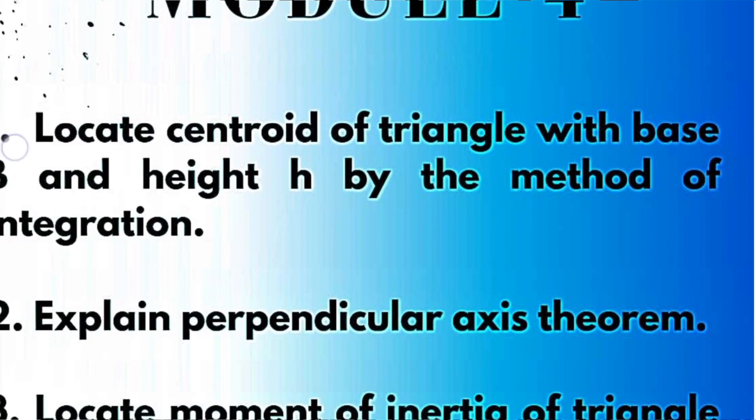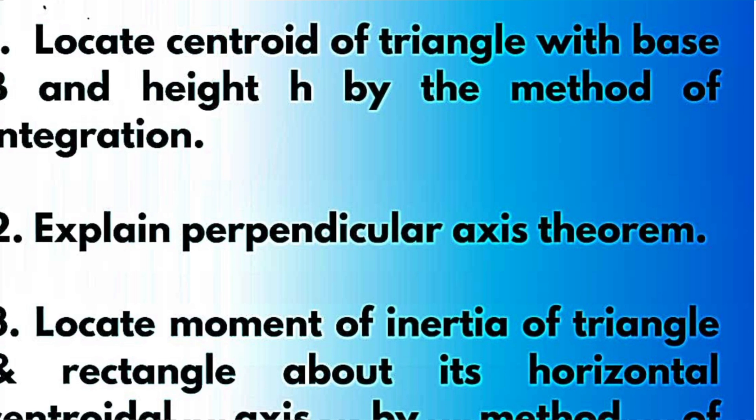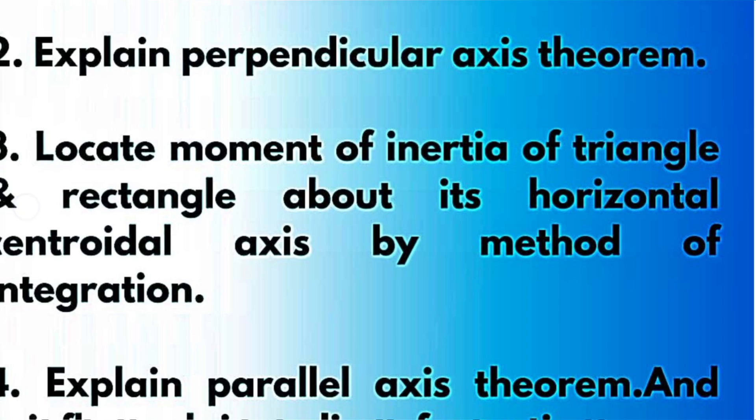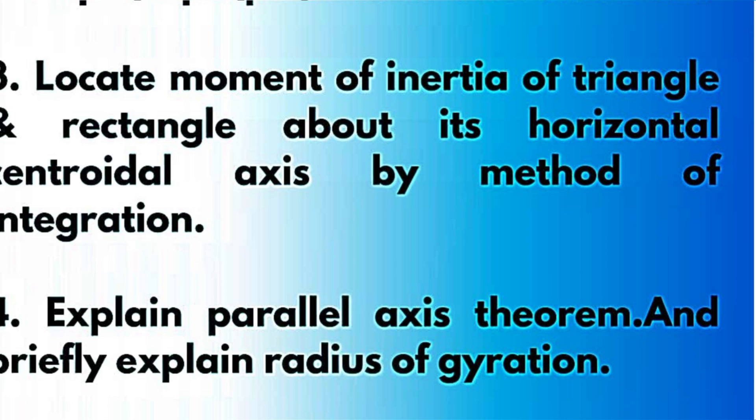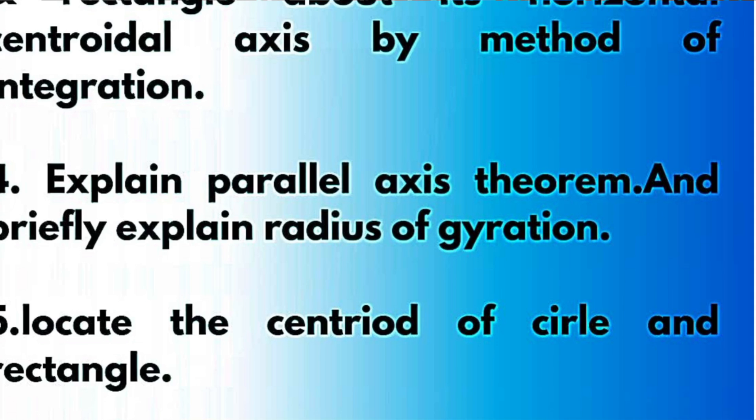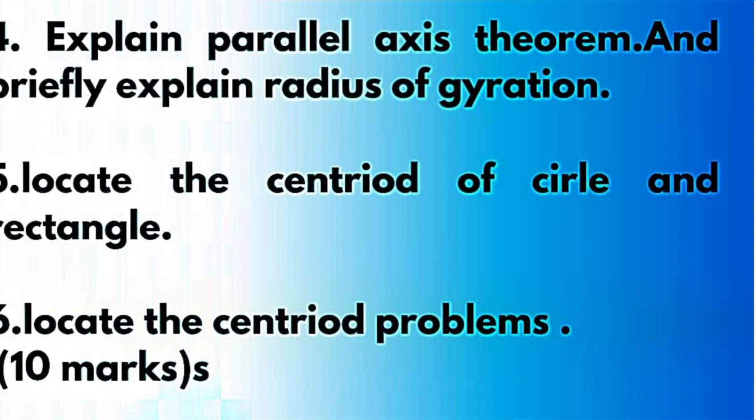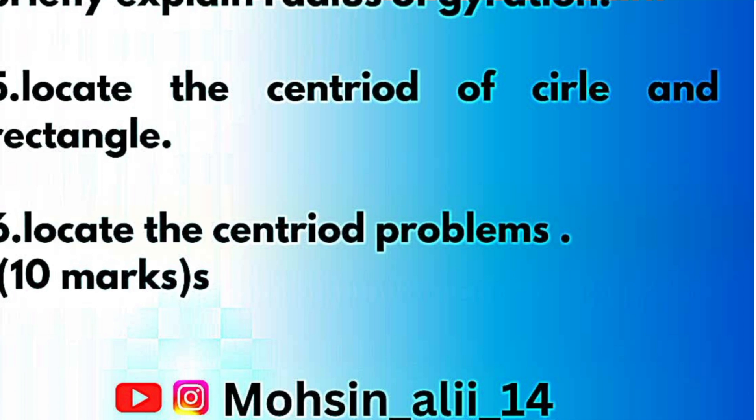Next is module 4 where again numericals are there and some theoretical portions like explain perpendicular axis theorem. Locate centroid of a triangle with base b and height h by the method of integration. Locate moment of inertia of triangle and rectangle about its horizontal centroidal axis by method of integration. Explain parallel axis theorem and briefly explain radius of gyration. There will be also some numericals on radius of gyration. Locate the centroid of circle and rectangle.